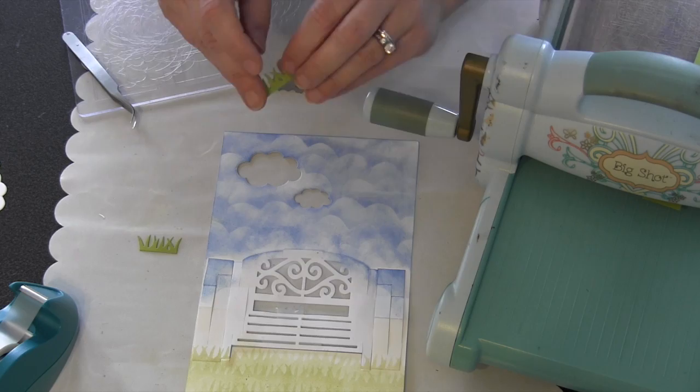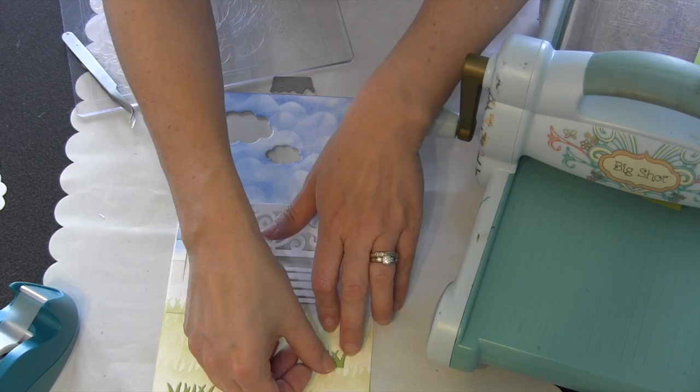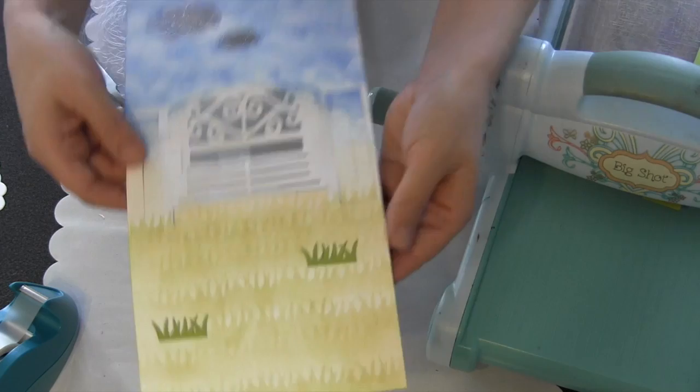Where you're really going to see what I mean is now I'm going to go back through and die cut my inlay grass pieces using a darker green cardstock. Then when I press it in, I don't have that little hole in between the two blades of grass. It actually is still in there from the background color.